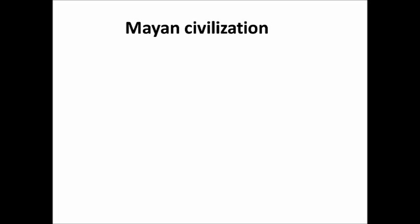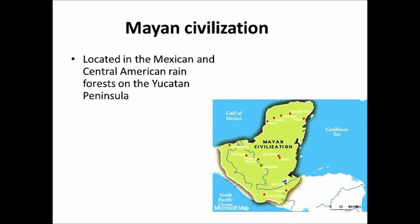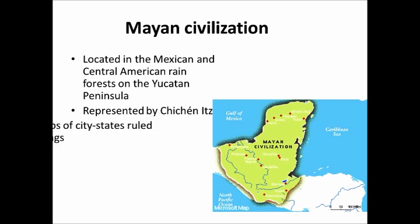The next group are one of the three primary tribes: the Mayan people. The Mayan civilization was located in what we consider Mexico today — part of the Mexican Central American Rainforest on the Yucatan Peninsula. Today this covers Mexico, Guatemala, Honduras, and Belize. The economy was based around agriculture and trade, represented by its capital city, Chichen Itza, which was their primary city-state.